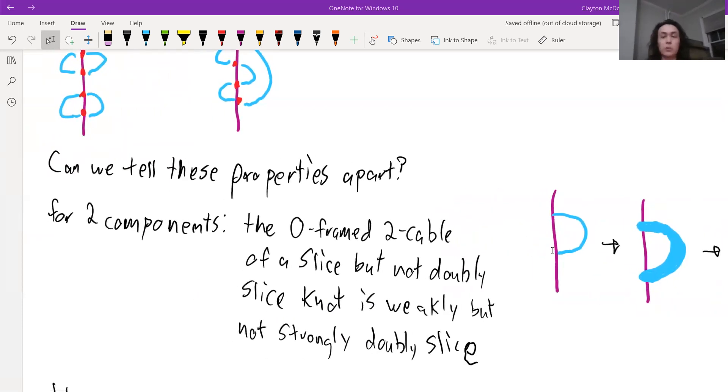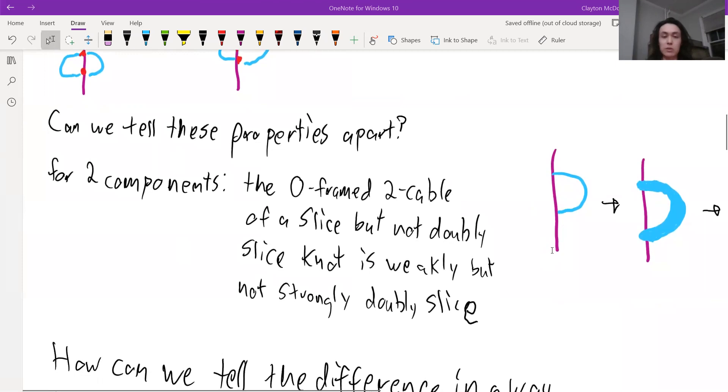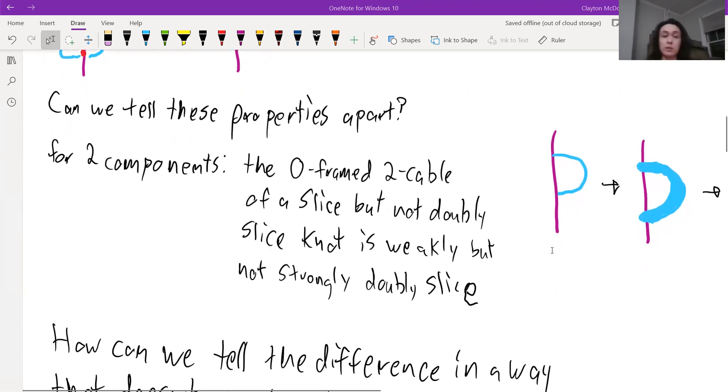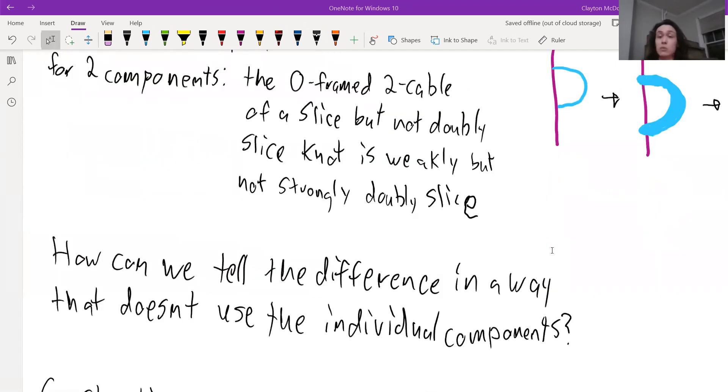So why aren't they strongly doubly sliced? Well, they don't have doubly slice components. But in some sense, this is kind of cheating, right? This isn't really looking at the link itself. It's kind of just looking at the components. So one question we might ask is how can we tell the difference in a way that doesn't use the individual components?